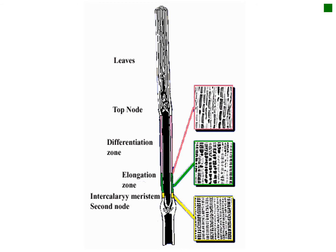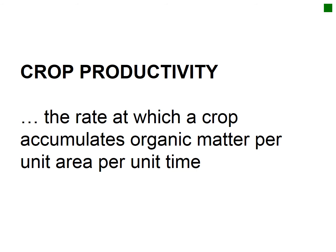You've all seen the S-shaped curve, or sigmoid function, that typically describes how plants grow and develop. There are various different phases of growth shown in this typical S-shaped plant growth curve. Productivity is defined as the rate or amount at which crop plants accumulate organic matter or biomass per unit area per unit time — how much material the plant is amassing.